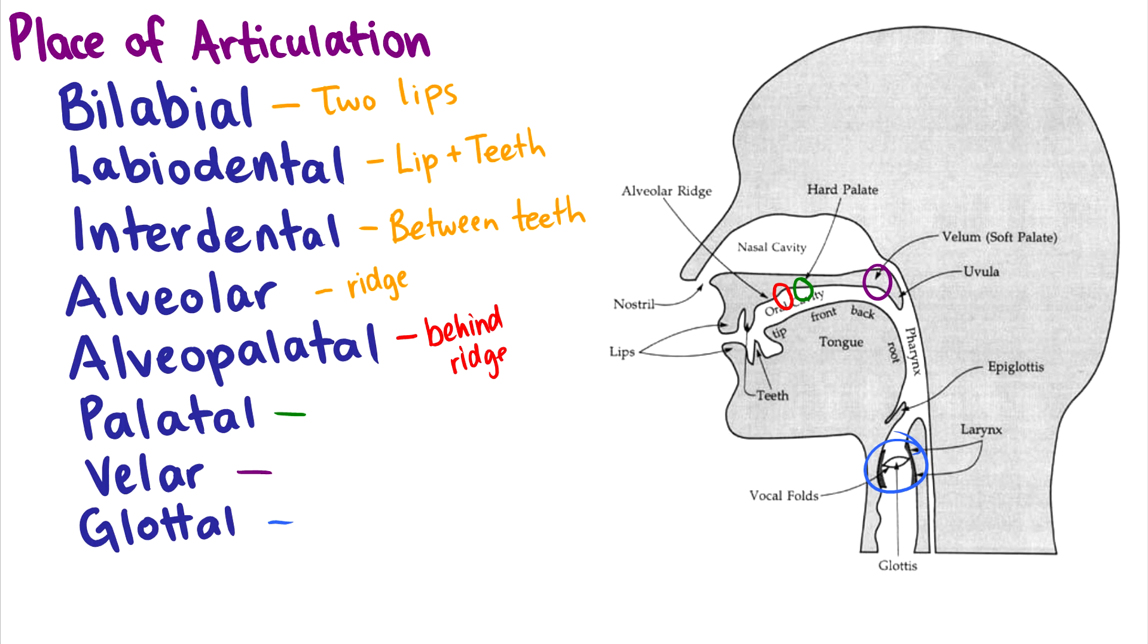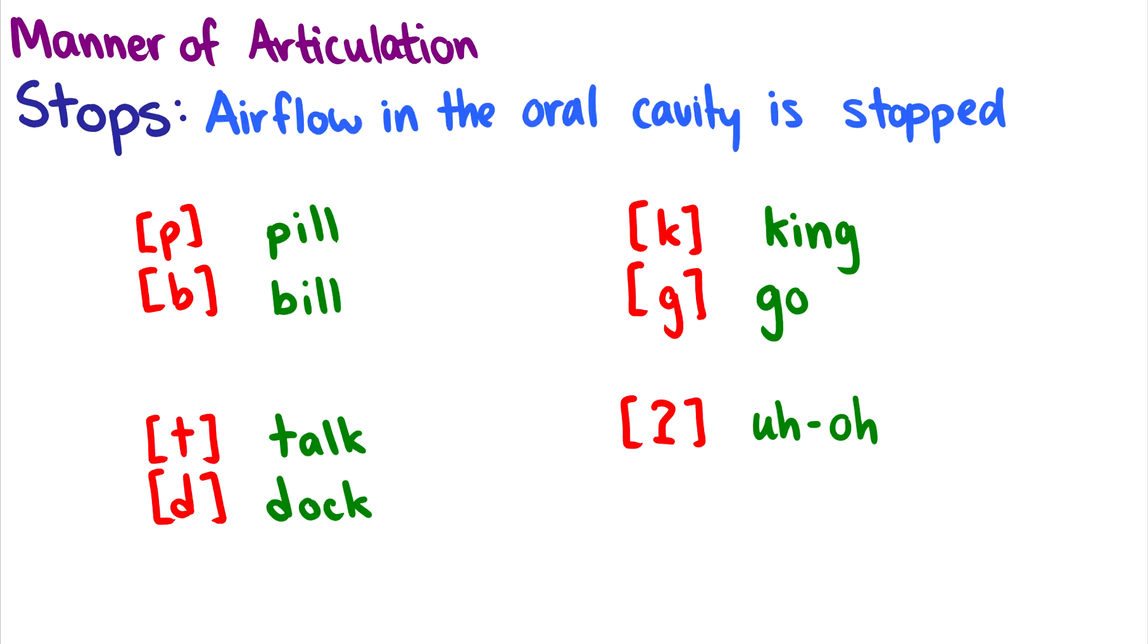So these are the places of articulation. But what's really more important when learning sounds are the manners of articulation. So every sound has a place and a manner and a voice. So manners are the different types of sound, and this is what the airflow is essentially doing.